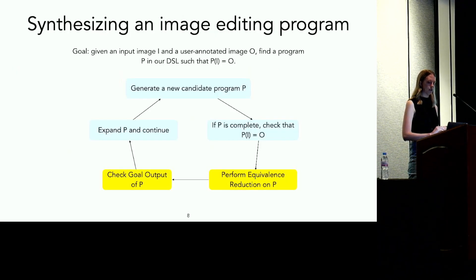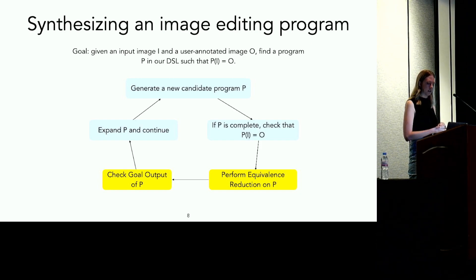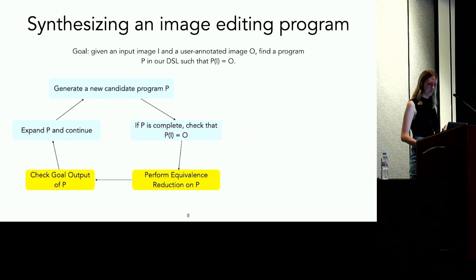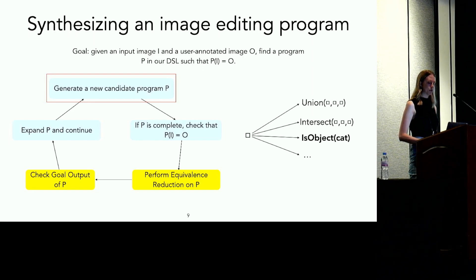I'll now explain how our program synthesizer for the image editing DSL works. The tricky part of synthesizing programs in our DSL is synthesizing the extractor. The synthesizer takes two images as input: the example image I and the version of that image annotated by the user O. The goal is to find a program P in our DSL such that P of I is equal to O. To generate candidate programs, our synthesizer performs top-down enumeration, starting with a partial program comprised of a single hole and iteratively filling that hole with constructs in our DSL. When we generate a candidate program that has no holes, we check whether its output on the input example image matches the user's demonstration. If it does, we return that program; otherwise, we continue enumerating programs.